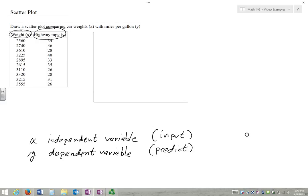Draw a scatter plot comparing the weight of a car X with the miles per gallon Y. So what we have to look at first is how do we know what's going to be our X and Y in general. Generally speaking, X is what we'll call our independent variable. It's what we're inputting.